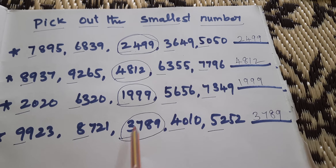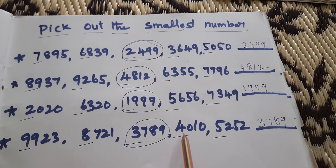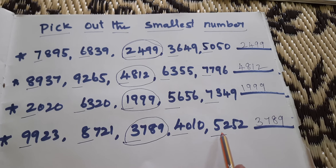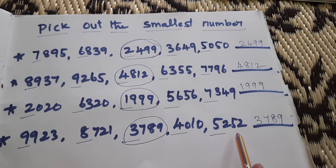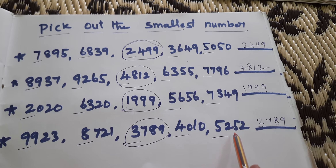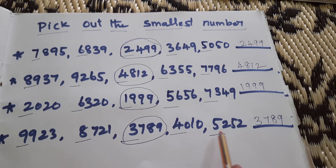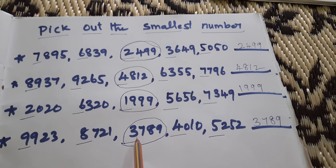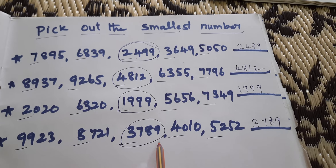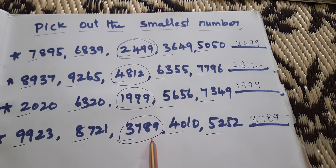Next set: 3799, 3789, 4010, 5000, 4010, 5252. Which one is the smallest number? Pick out the smallest number. 3789 is the smallest number.